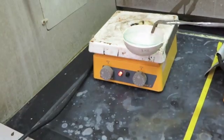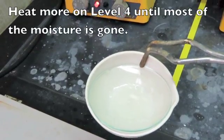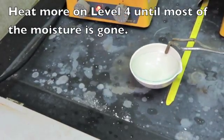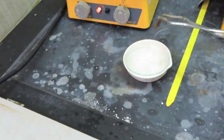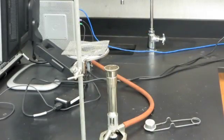After it's heated for about ten to fifteen minutes you'll take it off and you're going to notice that there's still some moisture in there. You're going to need to heat some more but turn it up to level four so that you can drive off most of the moisture and avoid spattering.